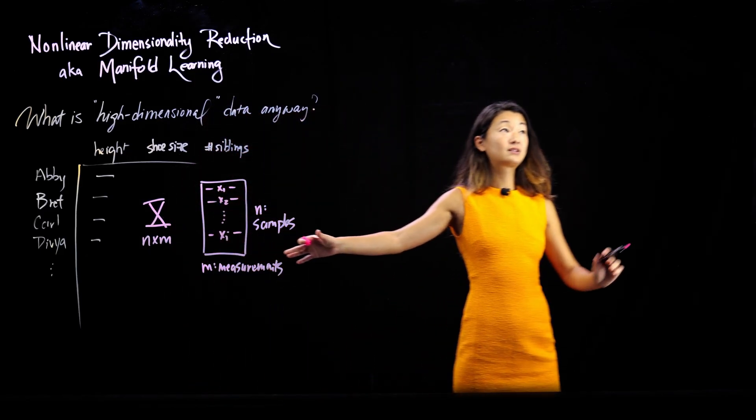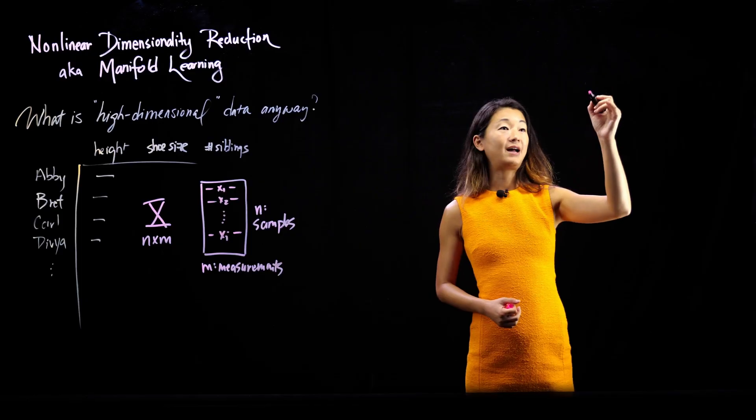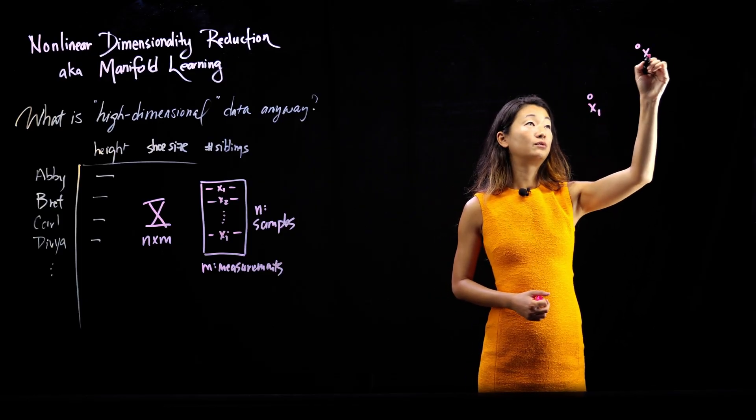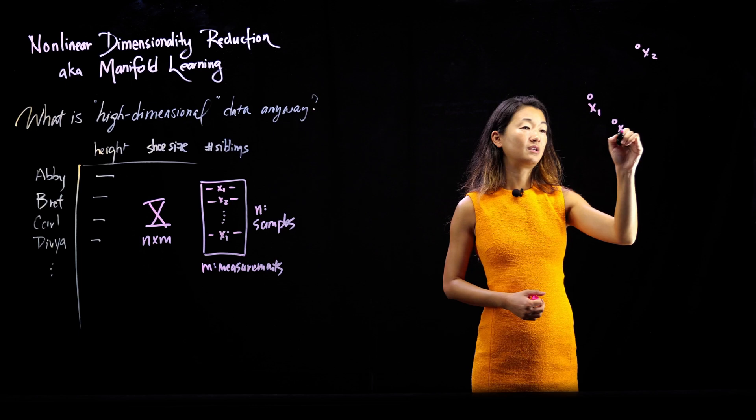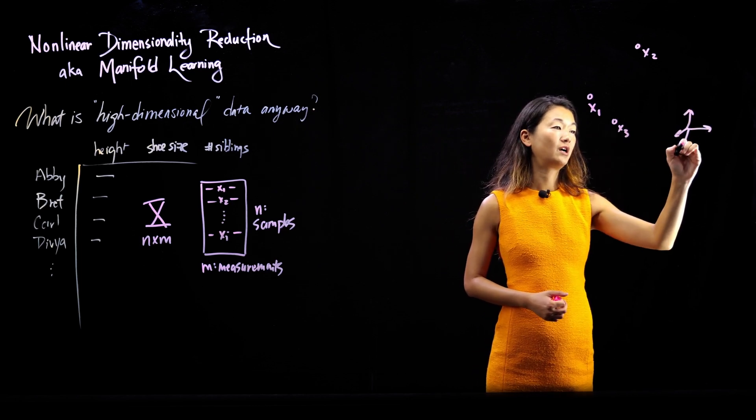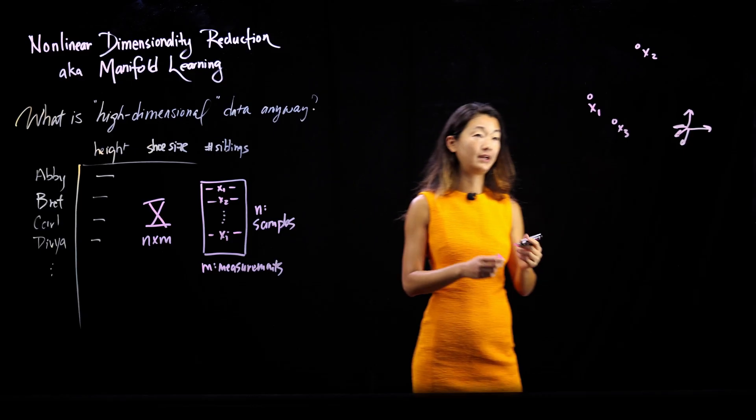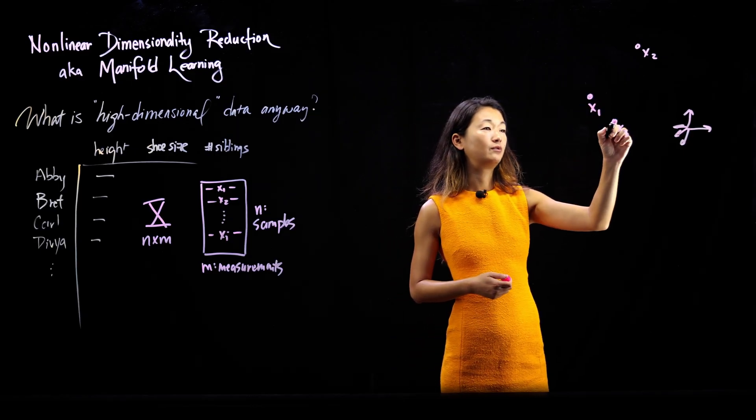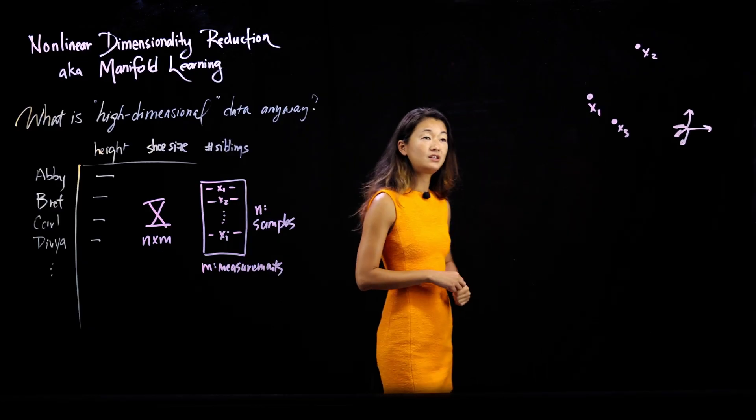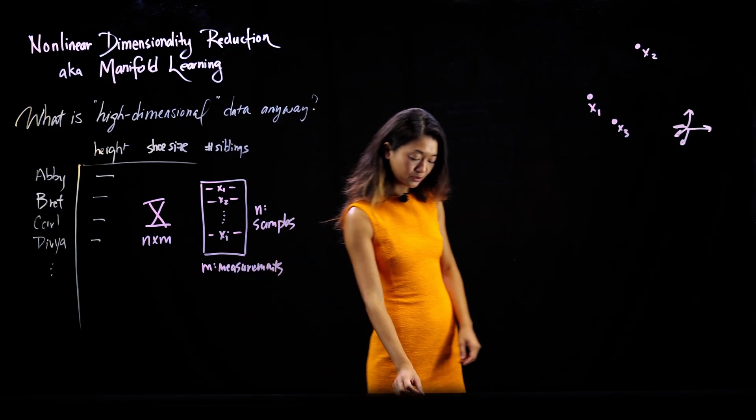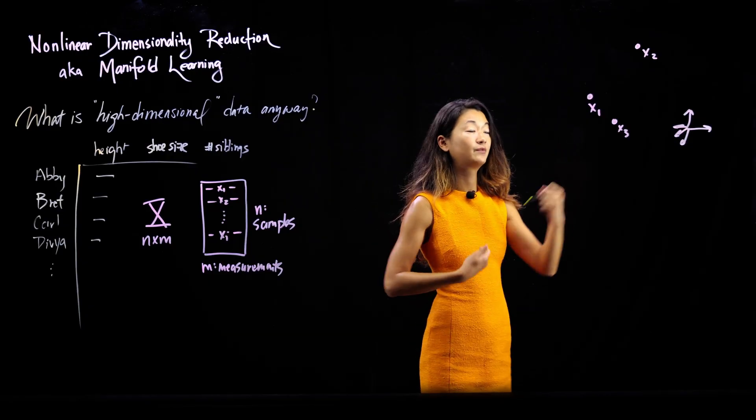And we can plot all of this on some kind of axis. So let's say that this is my first person, x2 is over here, and x3 is over here. And this is plotted in my measurement space. So however many dimensions of people that I have measured. Now I have these three data points right here. And you can kind of see just by looking at it in this way that some of them are closer to each other than to others.